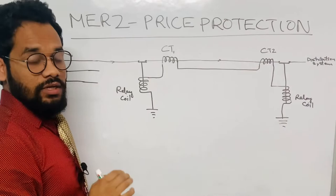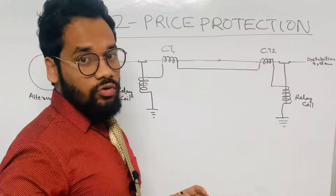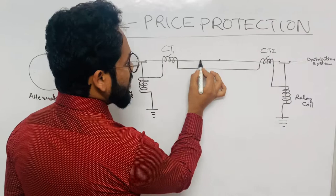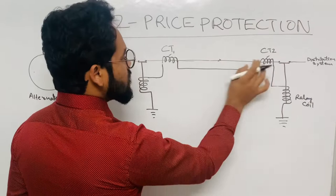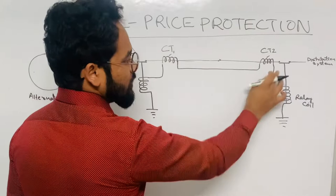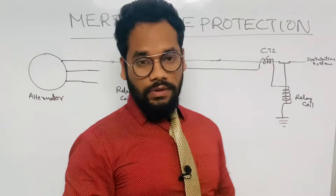In the normal scenario, since the induced EMF in CT1 and CT2 is the same, the potentials at both points are equal. When potentials are the same, no current flows between them. So no current will flow through the relay coils, and hence both relay coils will not be energized. The system keeps operating normally.